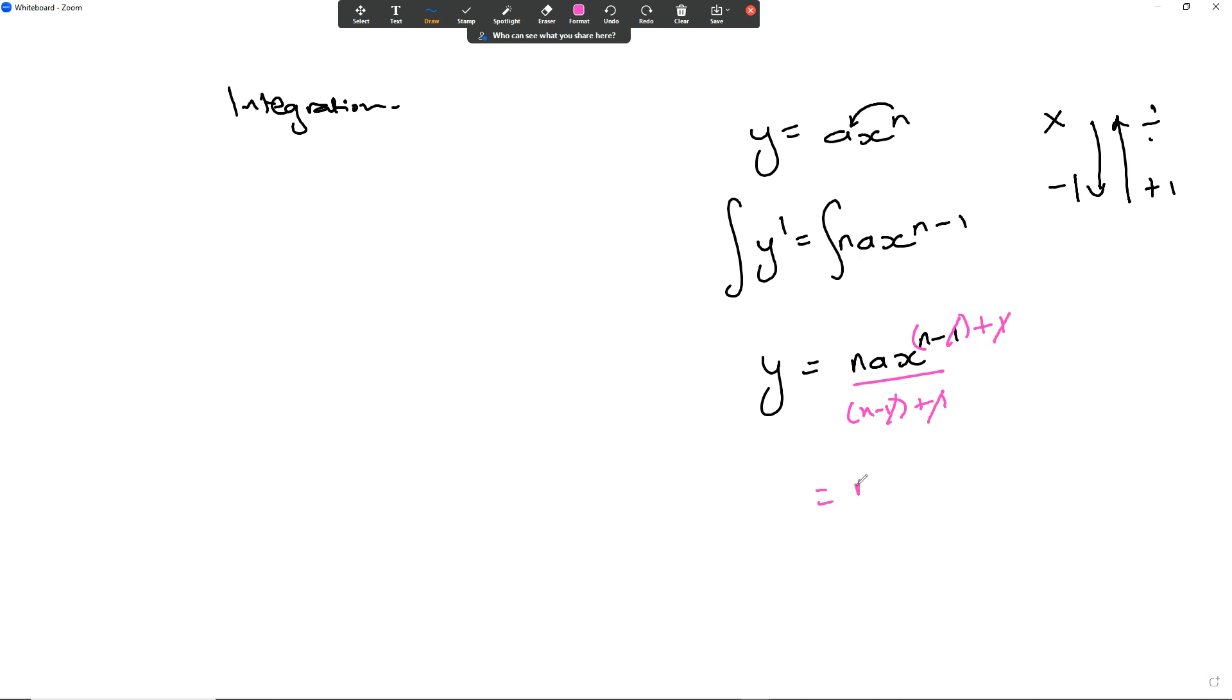Leaving you with nax to the power of n over n, which takes you back to the original function, y equals ax to the power of n.